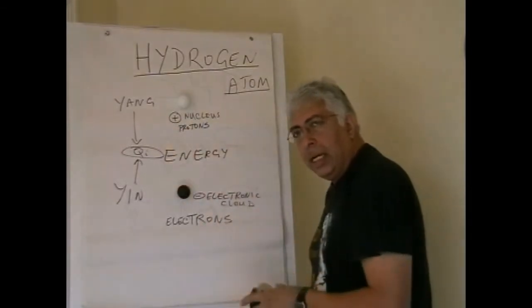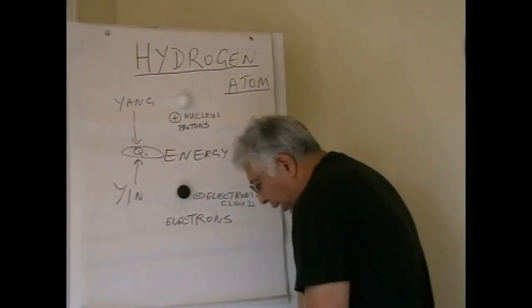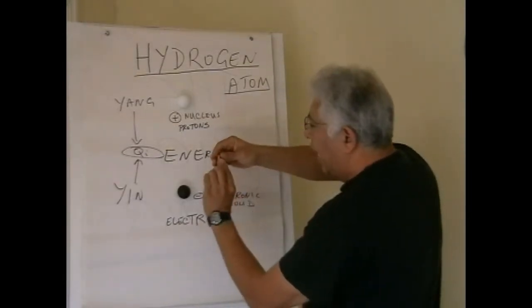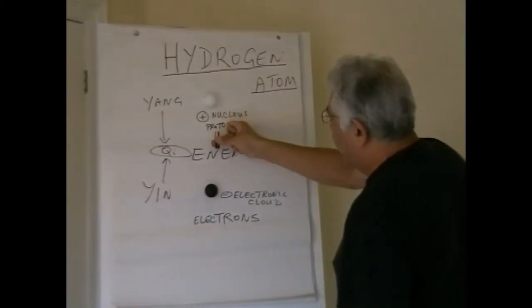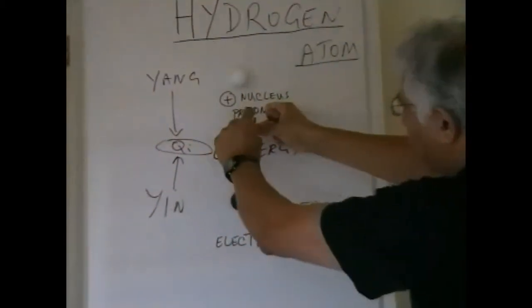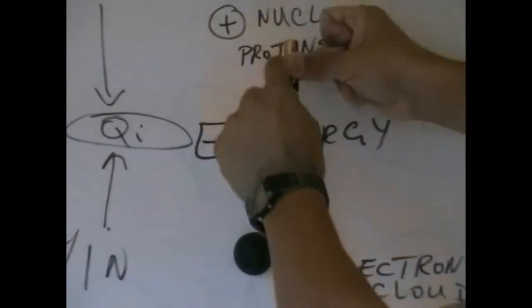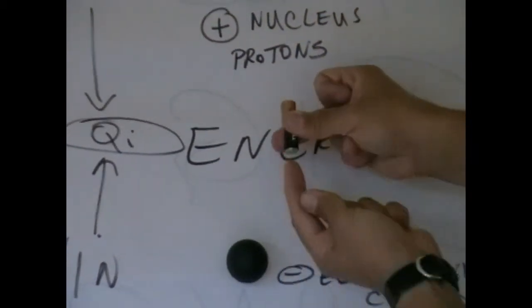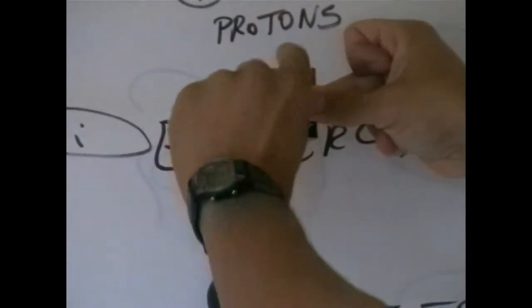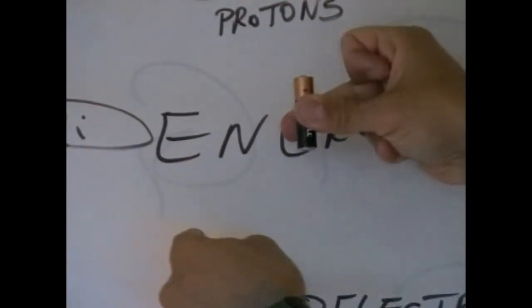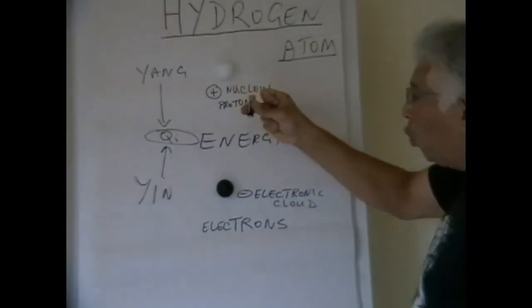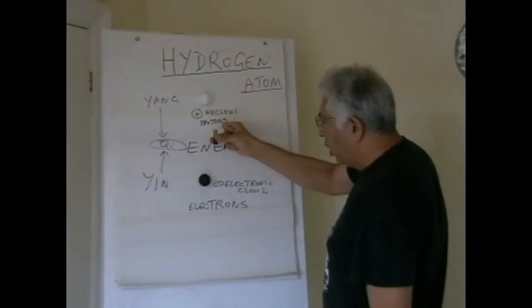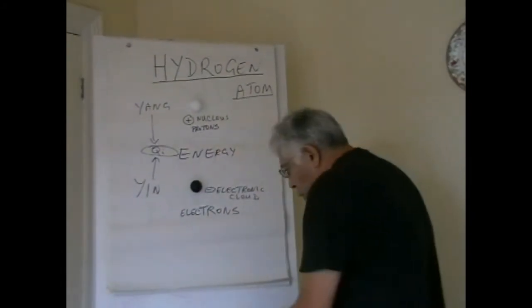If you look at a battery — we know what this is — a battery has a duality: a yang positive and a yin negative. When the battery works, it's the energy that flows between the yin and the yang, back and forth, that creates the energy. So we are energy.